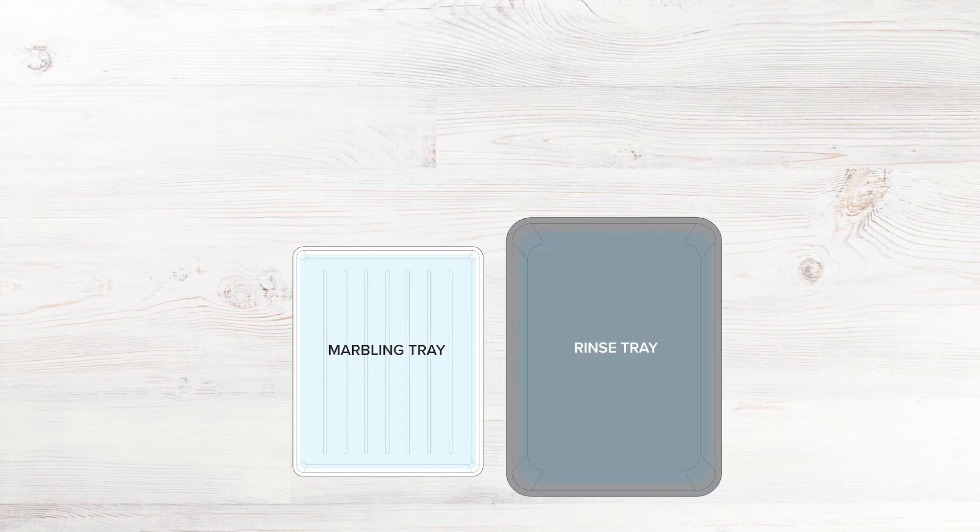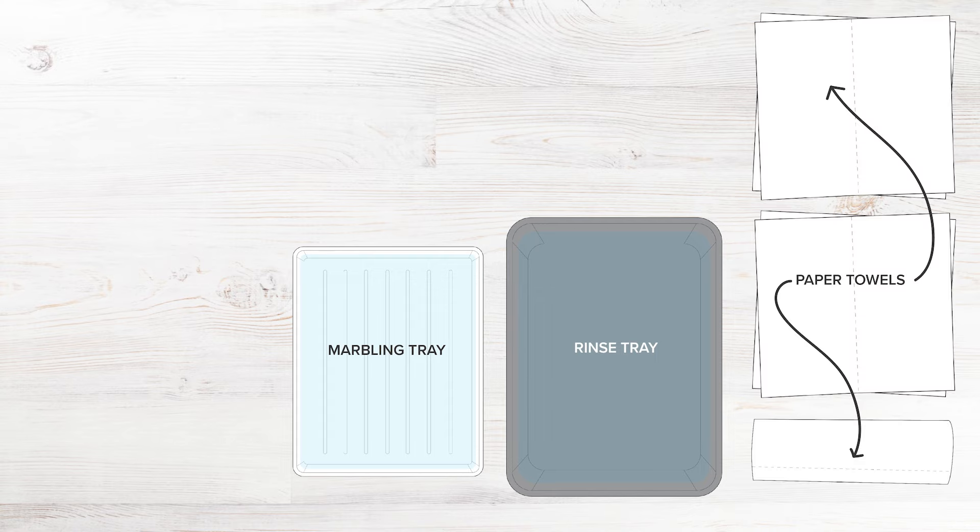When choosing the tray for marbling, it's super important to pick one that's slightly larger than the object that you're marbling. This makes it easier to build your pattern quickly and you don't waste a ton of paint. Paper towels come in handy, not only for cleanup, but also to dry your marbled pieces. Lay them out before you start, either on your work surface or a clothes drying rack can work great too.